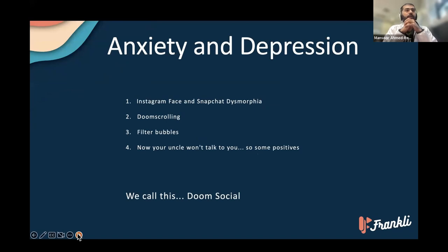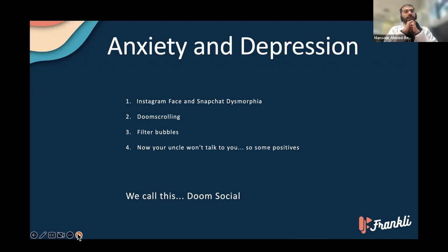There's also anxiety and depression. There's the phenomenon of Instagram face and Snapchat dysmorphia — young people consuming so much filtered and touched-up media on social platforms have gotten severe body image issues. There's been a real spike in teenage plastic surgeries and depressive thoughts related to body image. There's also doom scrolling, filter bubbles, and the downstream effect that your uncle doesn't talk to you anymore. We internally call this 'doom social' and see it as a consequence of how social media companies have their incentives aligned.